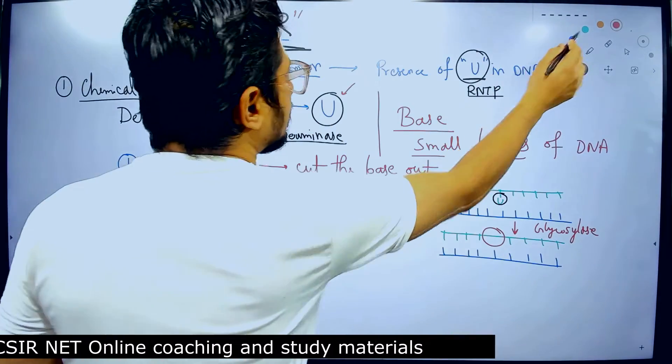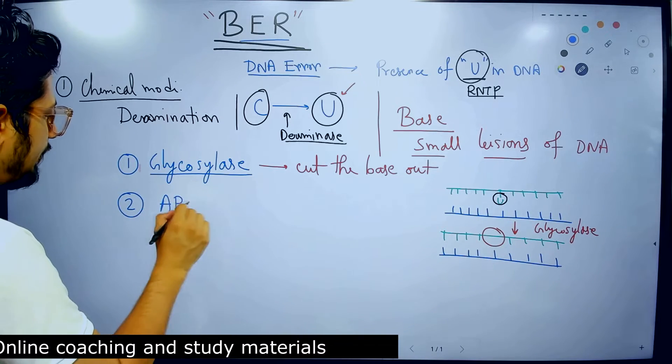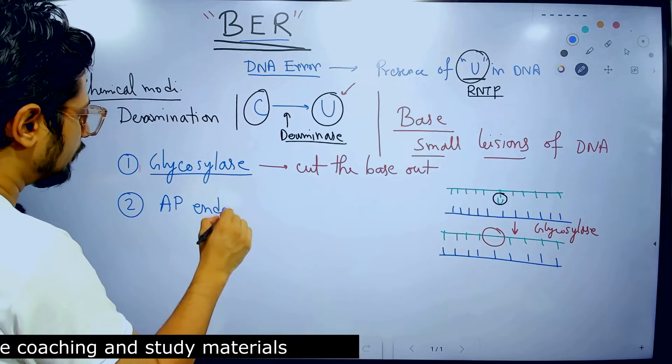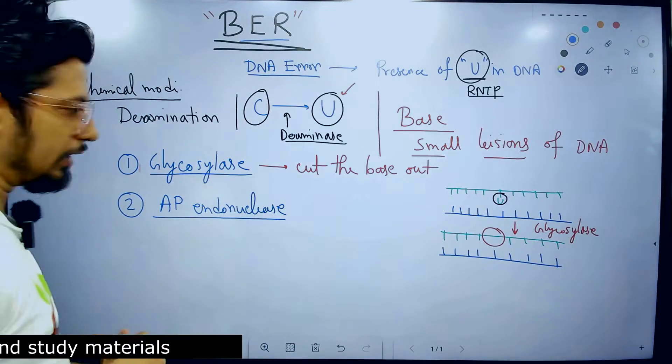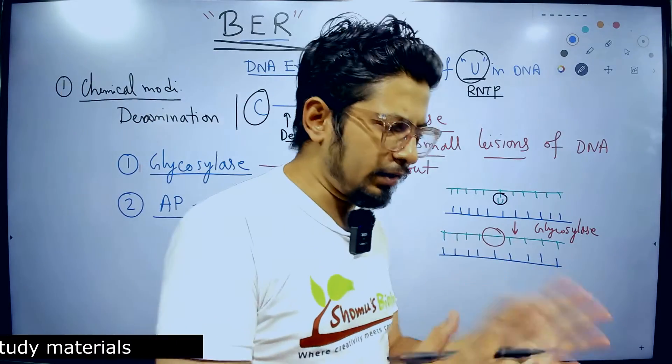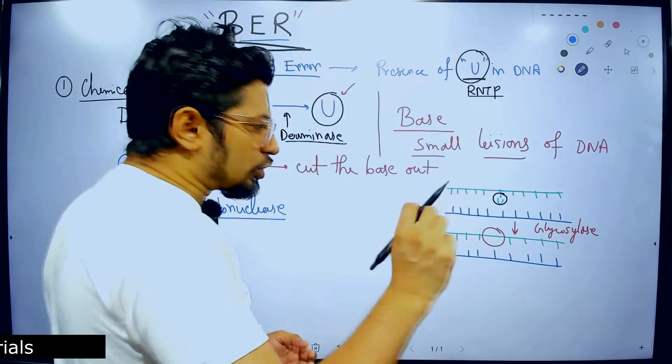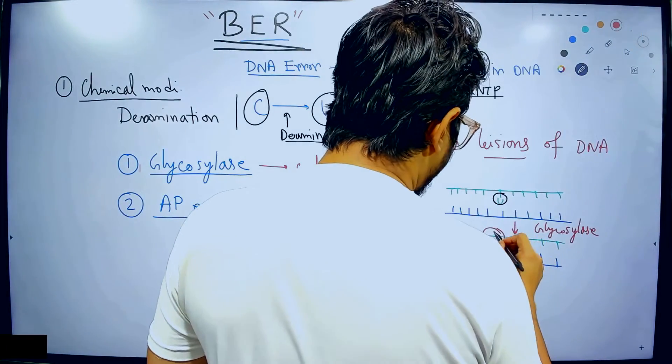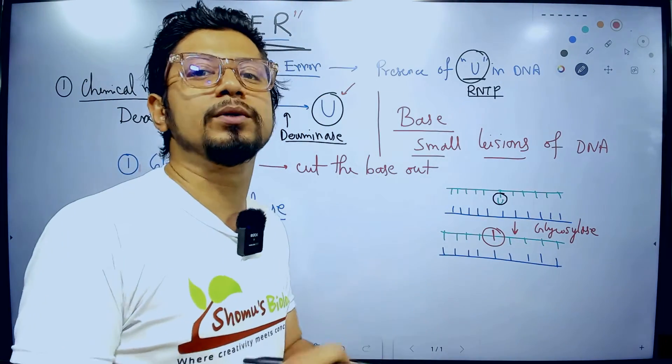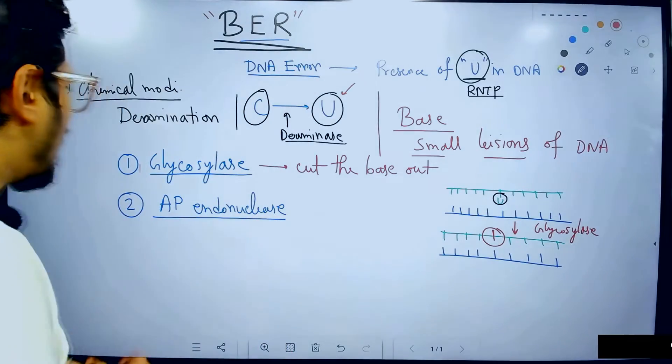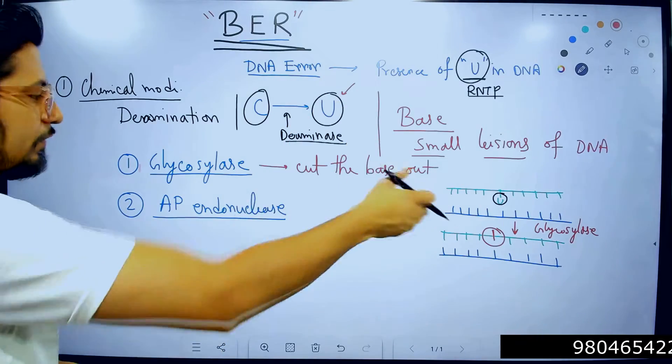Then comes the second enzyme here, and that is known as AP endonuclease. AP or apurinic/apyrimidinic, whatever nucleotide is being cleaved out based on that, AP endonuclease. Now, the job of AP endonuclease is to lay a cut in the phosphodiester backbone. That cut will be introduced by AP endonuclease. So, AP purionic endonuclease or AP pyrimidinic endonuclease, here AP purionic endonuclease that cleaves the phosphodiester bond.